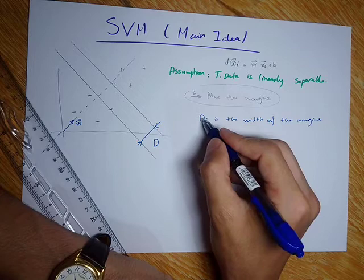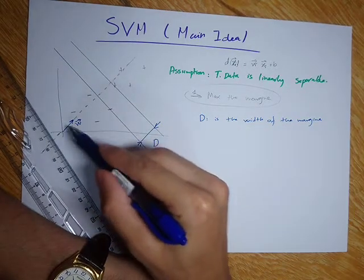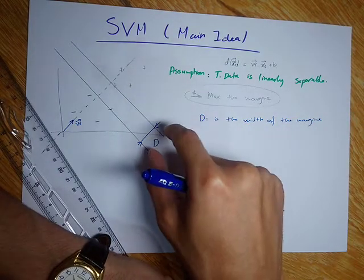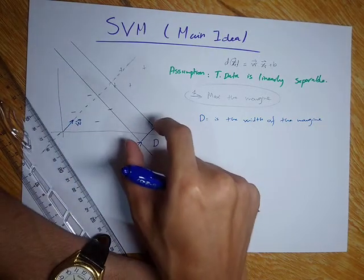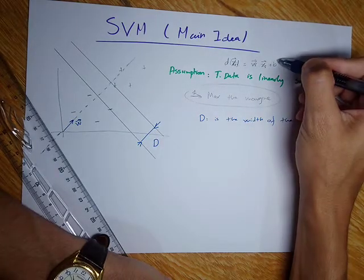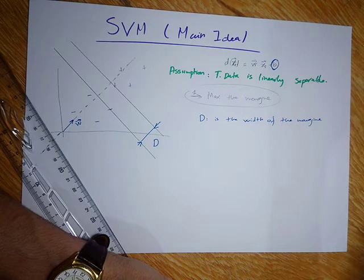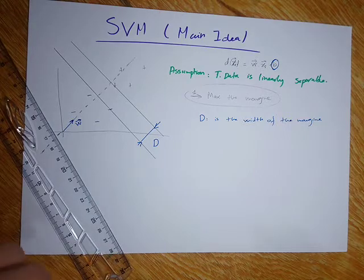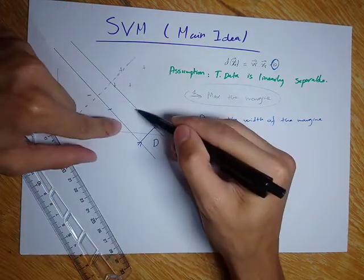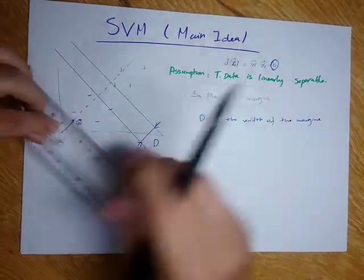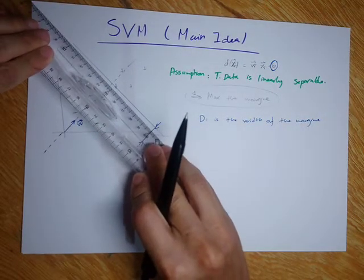I'm choosing d instead of w just not to confuse it with the weight vector w. So d is the width of the margin. I want to find w that would maximize the margin. The next step is to find b — b is just the position of the decision boundary given an orientation w. My decision boundary should be in between these two lines, in between this margin. We can have several possibilities: a decision boundary here, or here, or here.